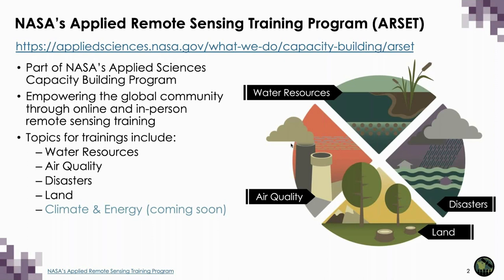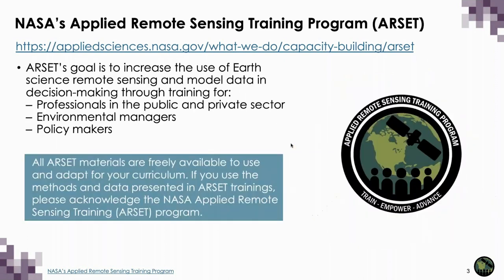Due to the COVID-19 pandemic, the program has suspended in-person training. Trainings cover a range of datasets and analysis tools and their applications to air quality, agriculture, disasters, land, and water resources management. RSET's goal is to increase the use of earth science remote sensing and model data in decision-making, with training for professionals in the public and private sector, environmental managers, and policy-makers.